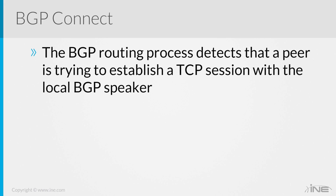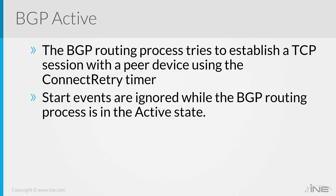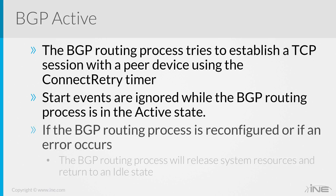You go into BGP connect once you've started receiving those open messages. The routing process detects that a peer is trying to establish a TCP session with the local BGP speaker. Then you go into active — the BGP routing process tries to establish a TCP connection with the peer using the connect retry timer. Start events are ignored while the BGP routing process is in the active state. If the process is reconfigured or an error occurs, it will return to the idle state. You might have the wrong autonomous system number, the wrong IP address, or the wrong update source.